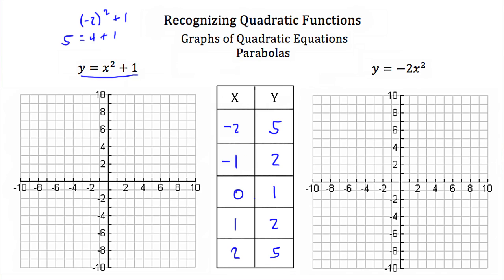So now we have five sets of ordered pairs. Let's plot these on our graph. Negative 2, 5 — we go to negative 2 on the x-axis and then up to 5 on the y-axis. Next, negative 1, 2 — we go to negative 1 on the x-axis and 2 on the y-axis. Then 0, 1 is right here; 1, 2 is right here; and 2, 5 will be up here. Now we connect these dots with a smooth curve, so the graph of our quadratic equation will look something like that. Notice this u-shape — it is called a parabola. All graphs of quadratic equations are parabolas.